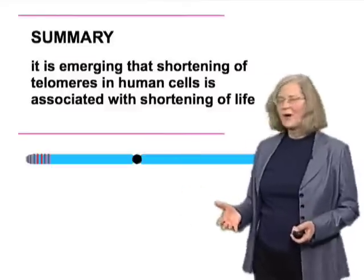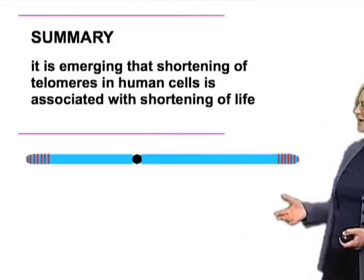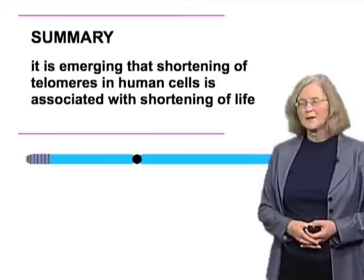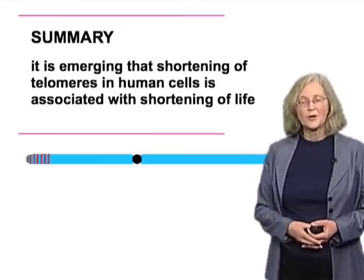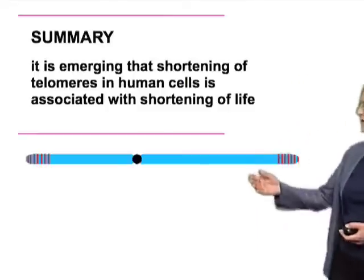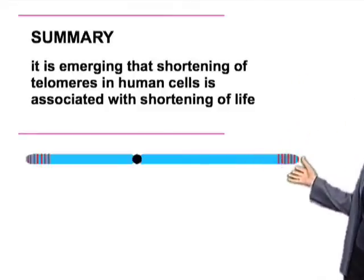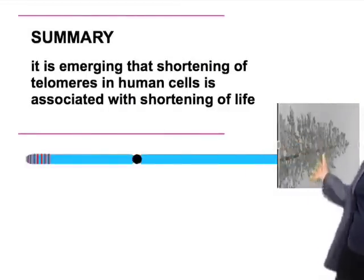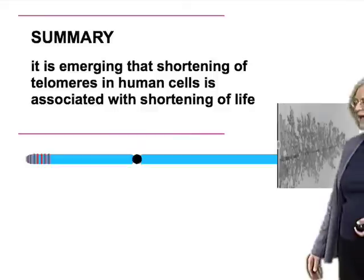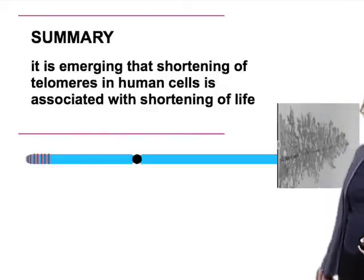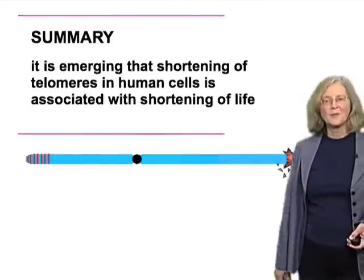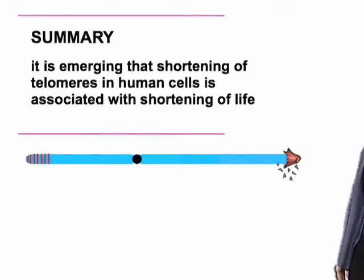In summary, it's emerging that shortening of telomeres in human cells is associated with shortening of life. If we think of a chromosome and the telomeric structure at its end, I like to think of this structure as a beautiful elaborate tree, and what we are trying to understand are the sorts of things that lead this beautiful tree to erode down to a stump. Thank you.